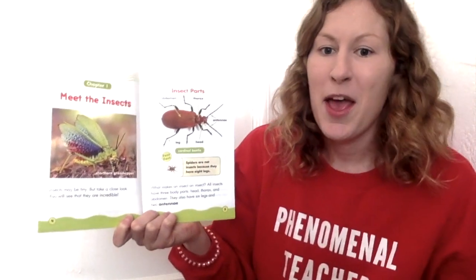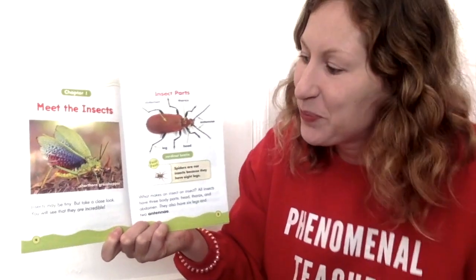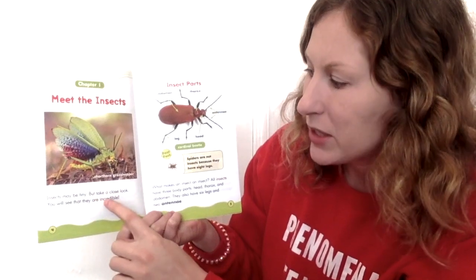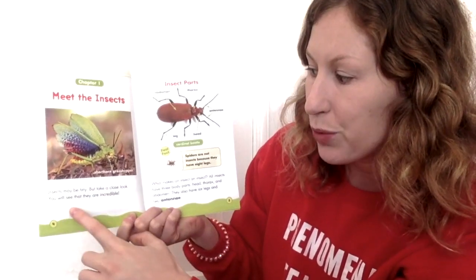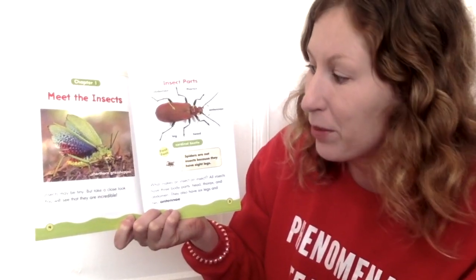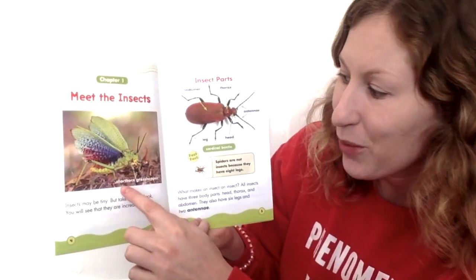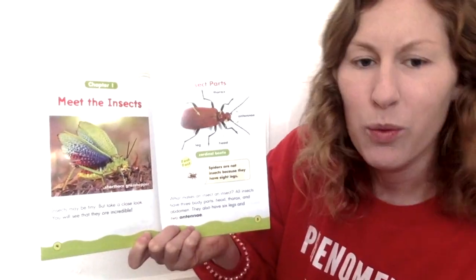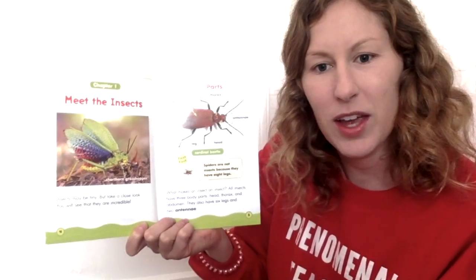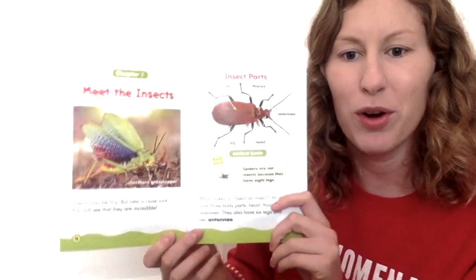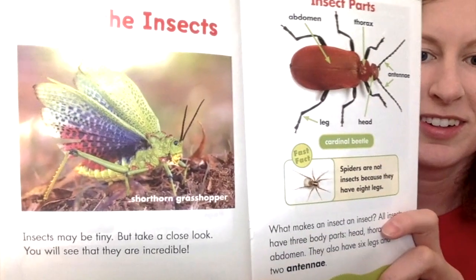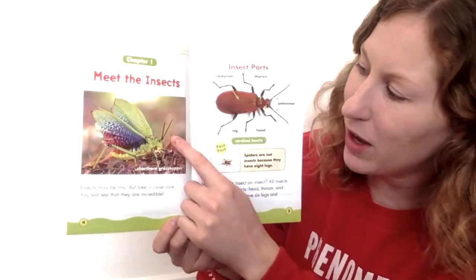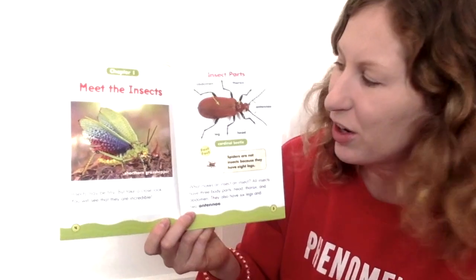Chapter one, meet the insects. Insects may be tiny, but take a closer look — you will see that they are incredible. Right here we have a short horn grasshopper. Why do you think it is called a short horn grasshopper? That's right, it might be because he has shorter horns right here.